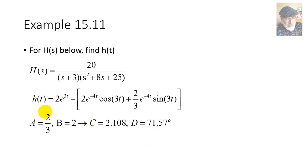Remember, C is the square root of 2 thirds squared plus 2 squared. And D is the arctangent of 2 divided by 2 over 3. And now you can write that h(t) as, sure, the first part, oh, there is something wrong here. It's 2 e to the negative 3T. There should be a negative sign here. Allow me. Negative sign here. Negative sign there. That's better. Minus 2.108 e to the negative 4T, which was factored out, sine of 3T. That hasn't changed it, plus 71.57 degrees. And that is that.